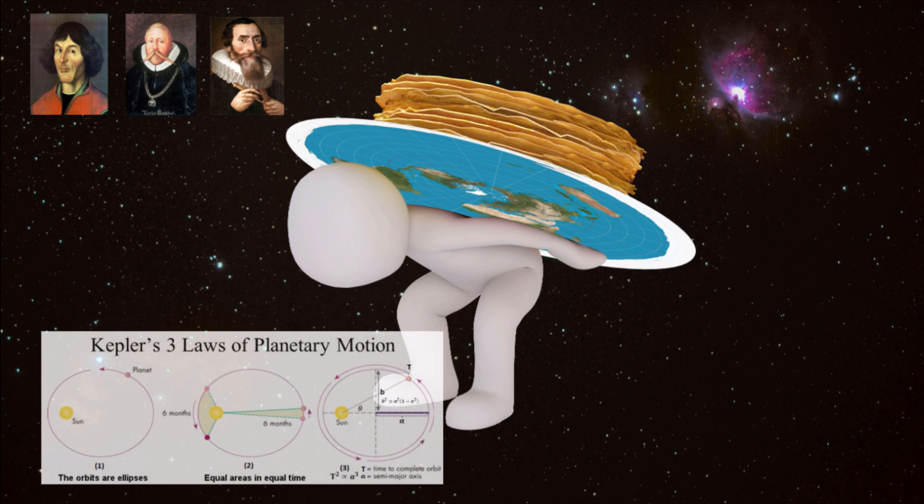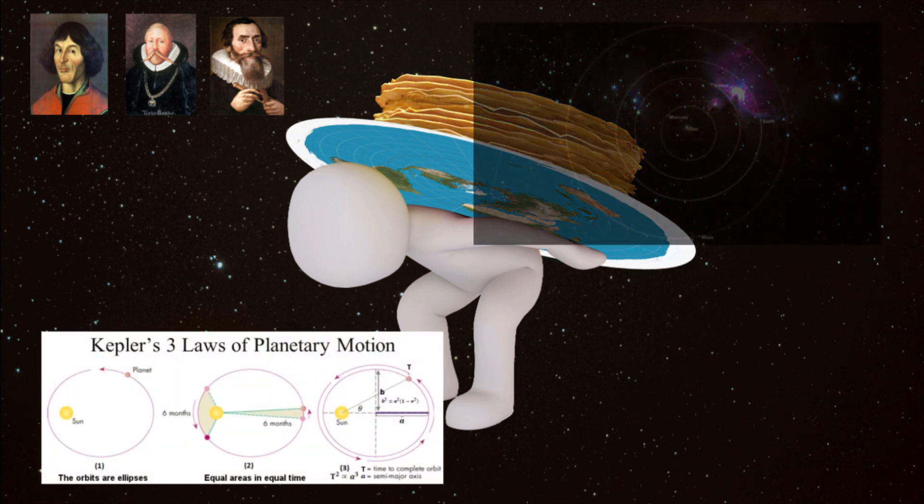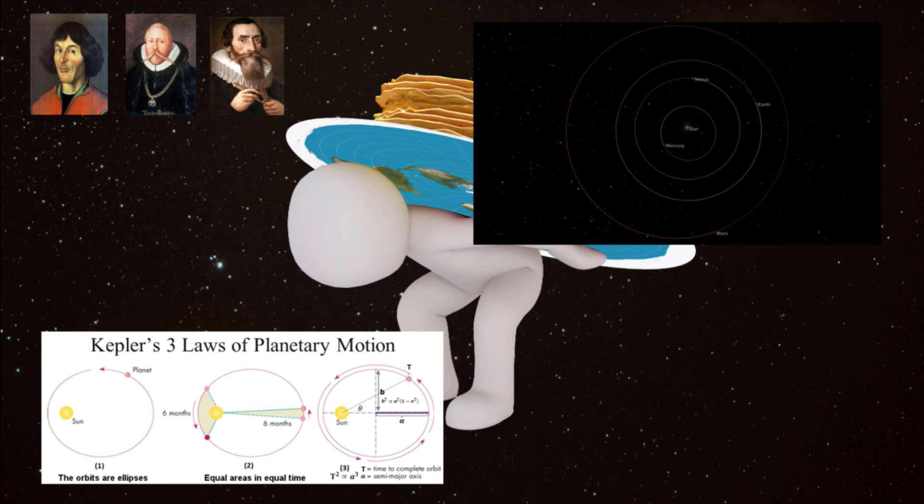In 1609, building on the giants that came before him, Johannes Kepler published his first works on the laws of planetary motion. Kepler used the precise observations of Mars provided by Brahe to determine that planets didn't actually orbit in perfect spheres, but rather ellipses, and that based on their distance from the Sun during these elliptical orbits, their speed would vary. When closer to the Sun, the speed increased. When farther away, it slowed down.